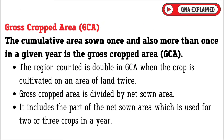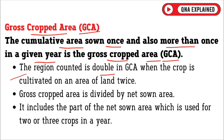Gross cropped area, denoted as GCA, is the cumulative area sown once and also more than once in a given year. The region counted is double in GCA when the crop is cultivated on an area of land twice.